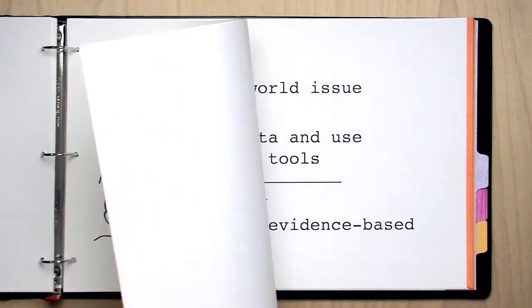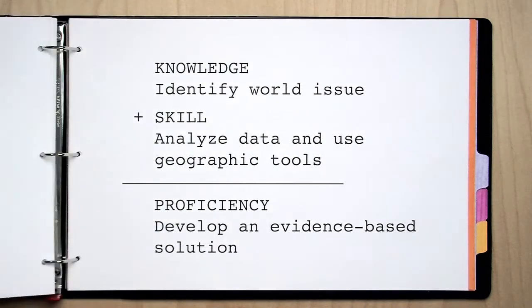Proficiencies let us spend less time memorizing facts and more time doing active and applied learning. In this case, the learning equation looks like this. Knowledge equals identifying a world issue. Skills equals analyzing and using geographic tools to figure out a creative solution. Proficient equals presenting an evidence-based solution.